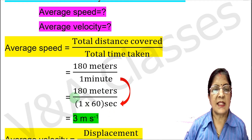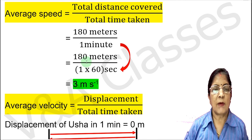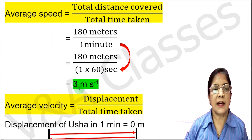So the next step gives us 180 meters divided by 60 seconds. Now we solve this. The value comes out to 3. Since we are calculating average speed, the unit is meters per second. So average speed equals 3 meters per second.